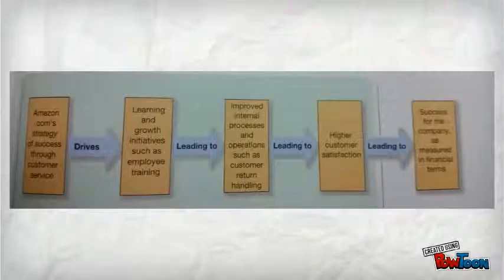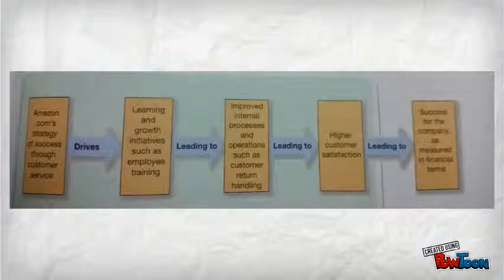Lead and lag indicators are critical in understanding the value of balanced scorecards. Lead indicators are measures of non-financial and financial outcomes that guide management and make concurrent decisions that will allow for desirable results in the future. Lag indicators are measures of the financial outcomes of earlier management decisions — examples are a company's profit and cash flow. If lead indicators communicate with, motivate, and evaluate individuals to result in improvement in the company's lag measures, i.e. profitability, then the goal of a balanced scorecard is met.